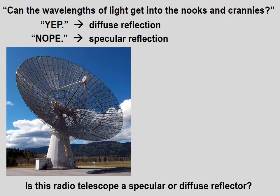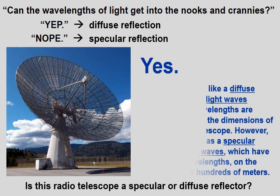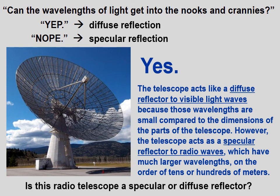Is this radio telescope a specular or diffuse reflector? The answer is yes — both. The telescope acts like a diffuse reflector to visible light waves because those wavelengths are small compared to the dimensions of the parts of the telescope. However, the telescope acts as a specular reflector to radio waves, which have much larger wavelengths on the order of tens or hundreds of meters.